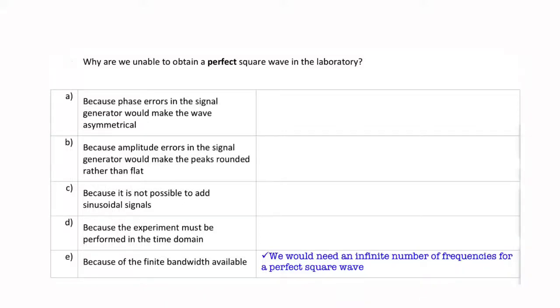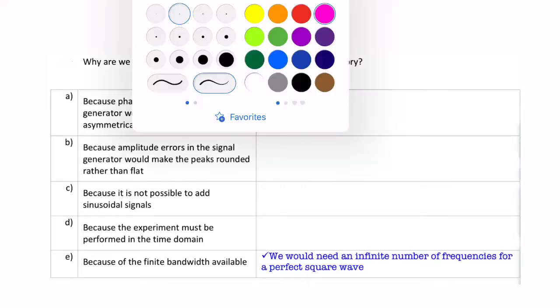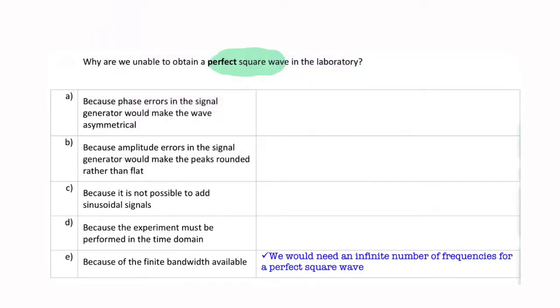This question is asking why can we never obtain a perfect square wave in the lab. A perfect square wave is one with these perfect sharp corners. We said this only really exists in textbooks or on a whiteboard.